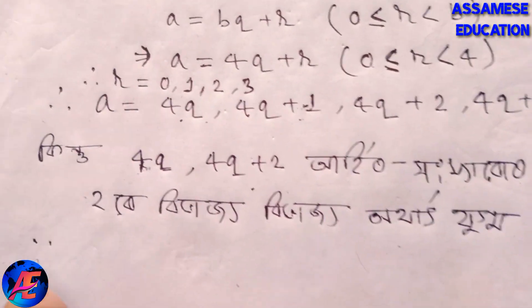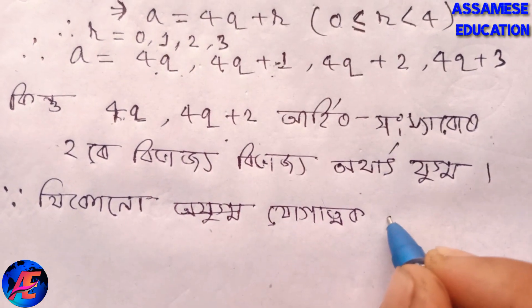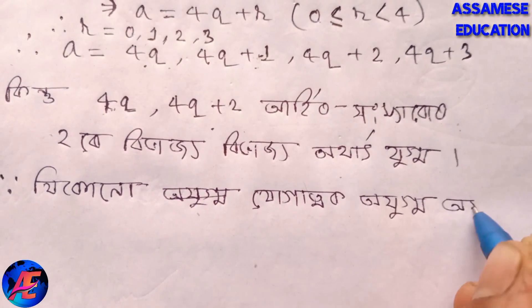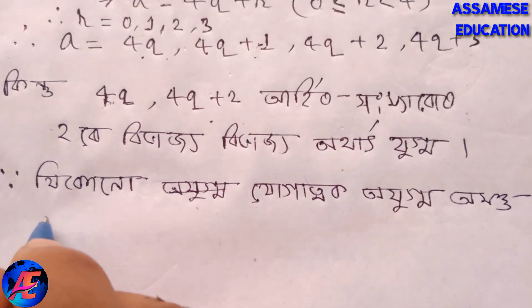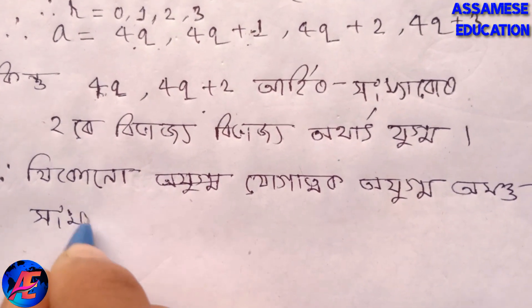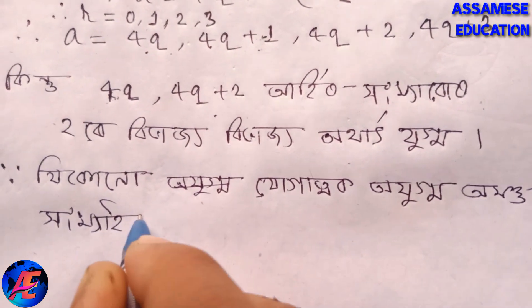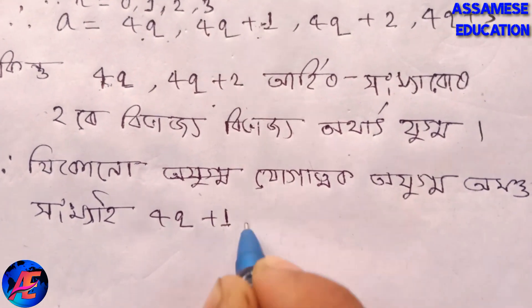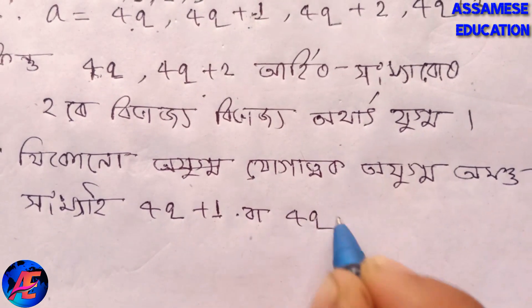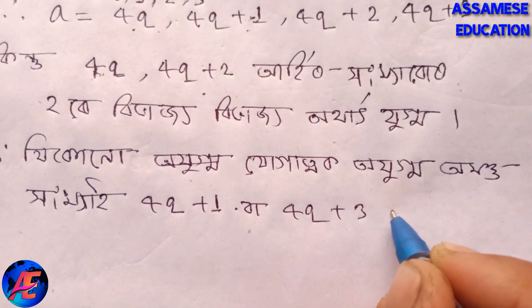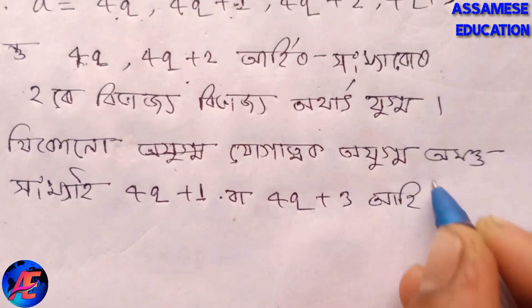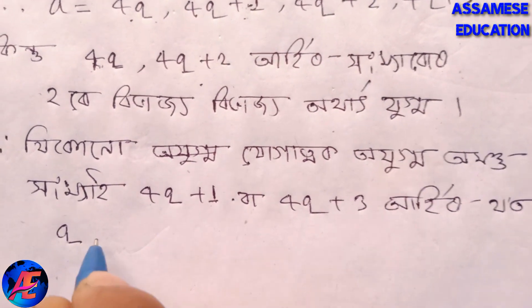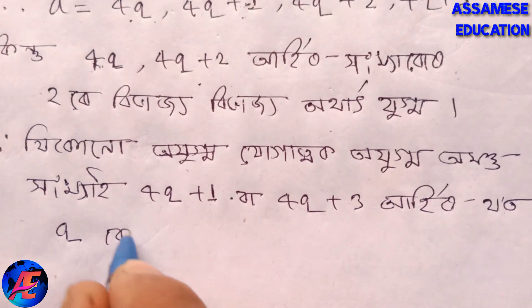So the question is: we need to show that 4q plus 1 and 4q plus 3 are odd integers.